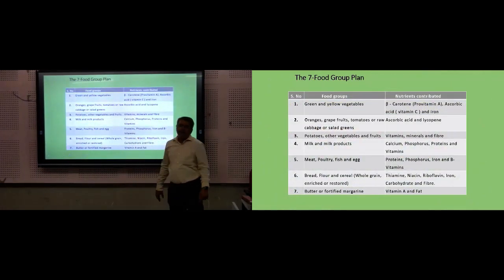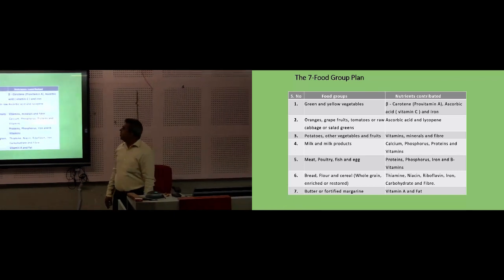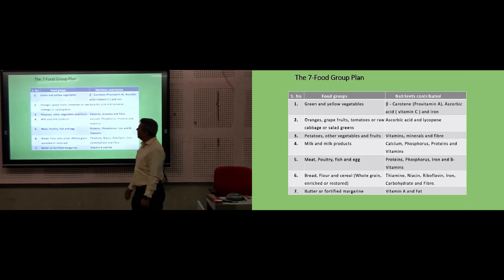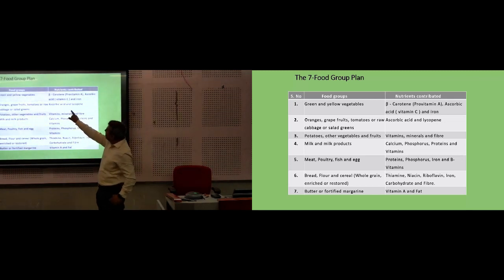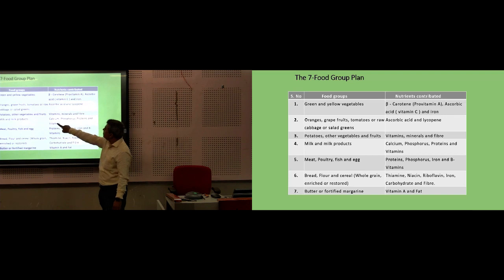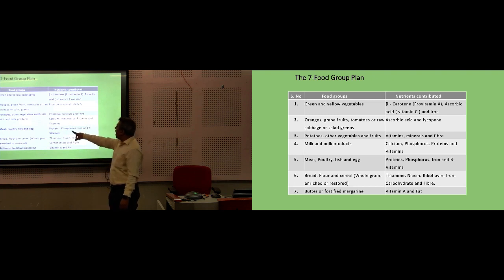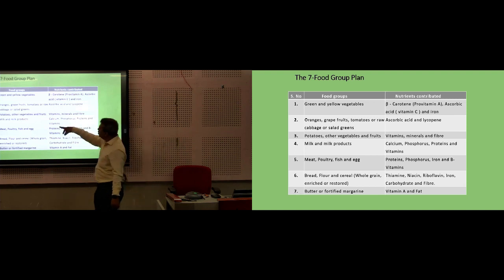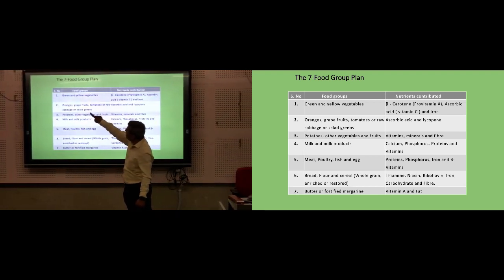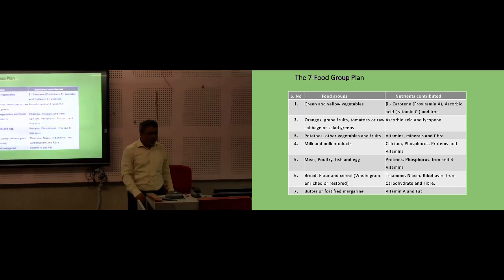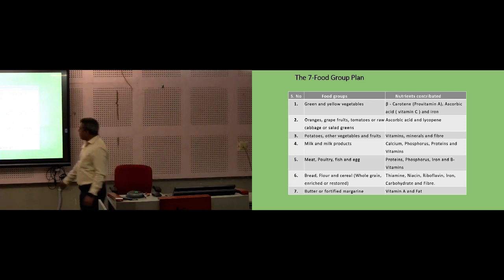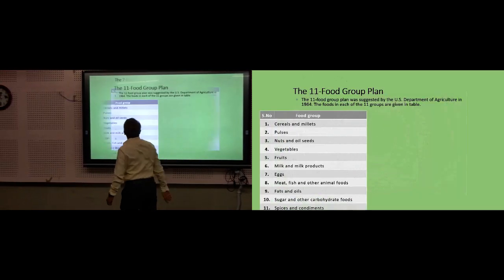Now the seven food group plan — you have to remember the acronym GOPMMVB: Green and yellow vegetables; Orange and grapefruit, tomatoes, and raw fruit (ascorbic acid); Potatoes and vegetable fruits (vitamins and minerals); Milk and milk products (calcium, phosphorus, protein); Meat, poultry, fish, and eggs; Bread and flour; and Butter and fortified margarine. This is the seven-group food plan.